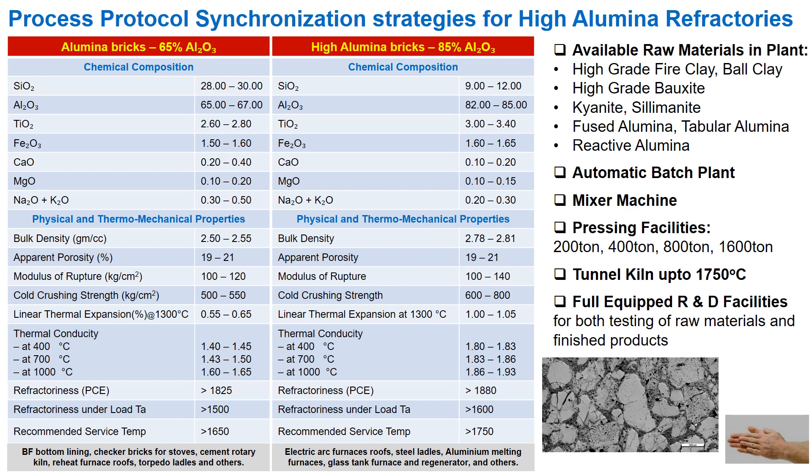How can one develop different alumina content refractories from available raw materials and meet specifications? To answer that, we follow certain steps: first, check the chemical composition of bricks and other properties; perform the chemical analysis of available raw materials in your unit; fix the composition and execute trials to achieve desired physical and thermomechanical properties; and optimize the pressure and temperature from existing facilities.